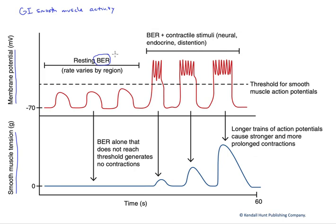This varies by region. In other words, as we move through the GI tract, the rate of this basal electrical rhythm, also known as the slow wave, can differ. It can vary from about three or four per minute to about twelve per minute depending upon the region we're in.